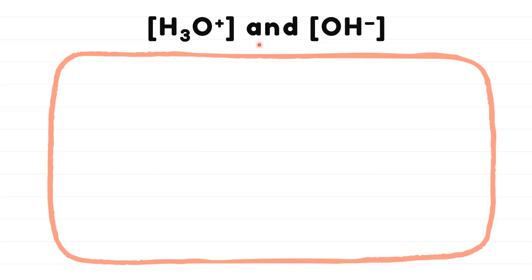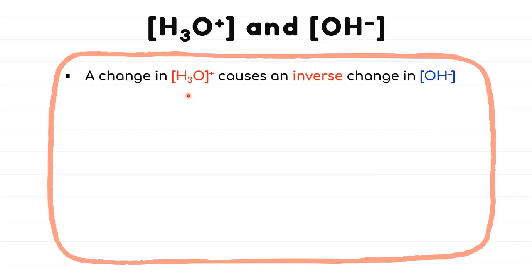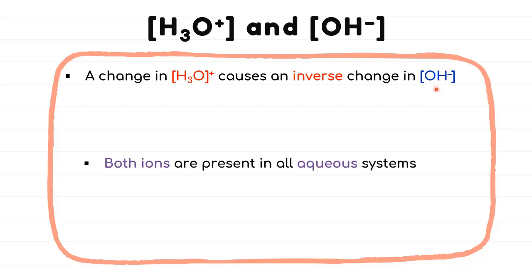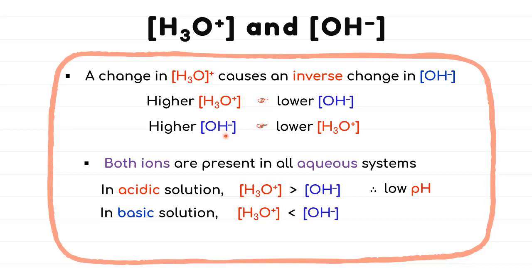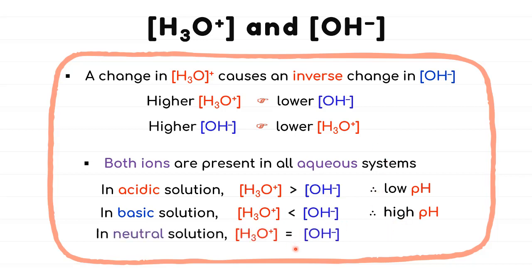Any change in hydroxonium ion concentration will cause an inverse change in hydroxide ion concentration, as both ions are present in all aqueous solutions. If a solution contains greater concentration of H+ or H3O+, then the concentration of OH− will be lower, so the solution is acidic with low pH. In contrast, solutions with greater concentration of OH− are basic with high pH. If both ions have equal amounts, the solution is neutral, with both pH and pOH equal to 7.